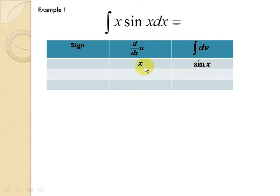You write the x and the sin x in the first row, and you differentiate x until you have 0. Differentiate x, you will get 1. Differentiate 1, you will get 0. For the integration part, you integrate sin x and you will get negative cos x. You integrate negative cos x, you will get negative sin x.